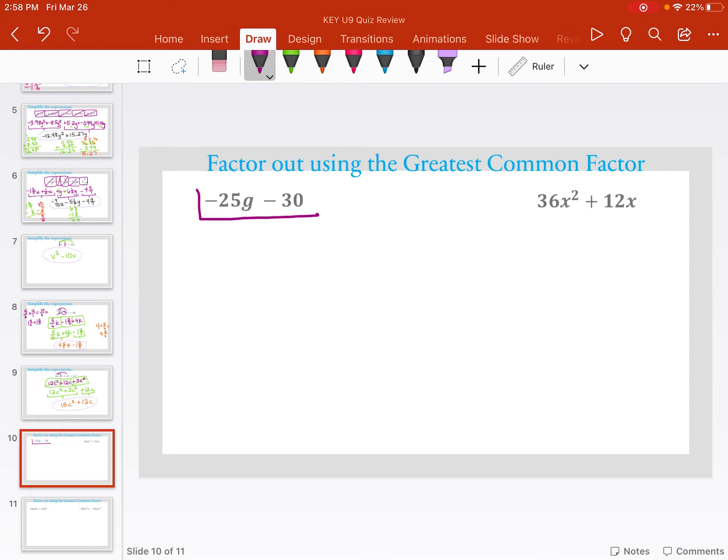25 and 30 both have a 5 in common, so I'm going to divide by 5. I also notice that they both have a negative, so I'm really going to divide out a negative 5. So now, negative 25 divided by 5 leaves me 5g left over. Negative 30 divided by negative 5 leaves me a positive 6 inside.